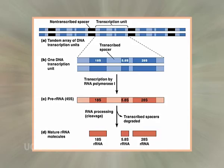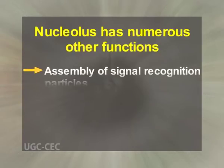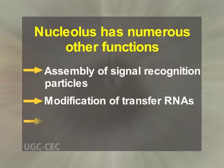Ribosome assembly begins with the transcription of pre-rRNA by RNA polymerase I. Ribosomal and non-ribosomal proteins and 5S RNA associate with the pre-rRNA during and after transcription. The pre-rRNA is then modified and processed into rRNA with the aid of non-ribosomal proteins and small nucleolar RNAs. The Nucleolus also has numerous other functions including assembly of signal recognition particles, modification of transfer RNAs, and sensing cellular stress.